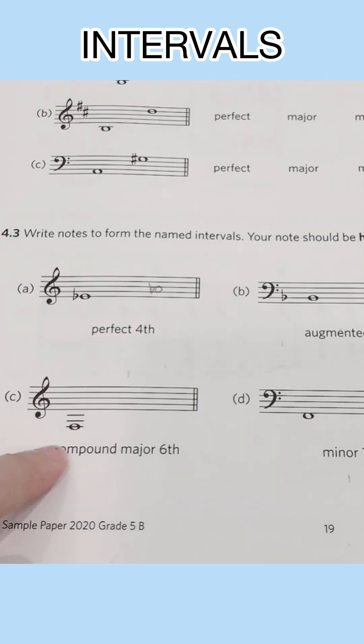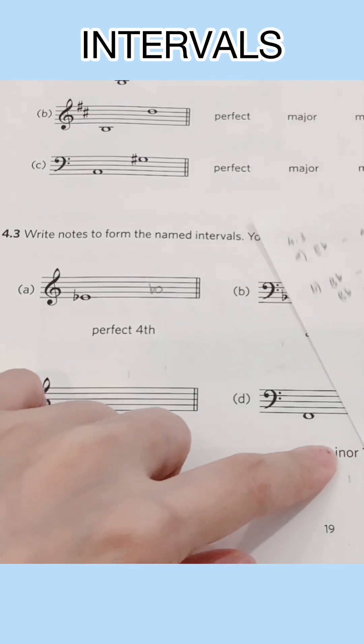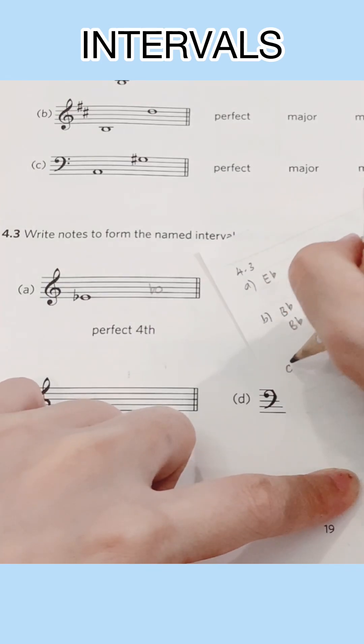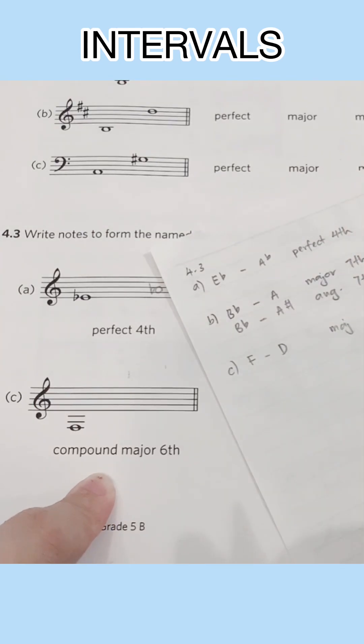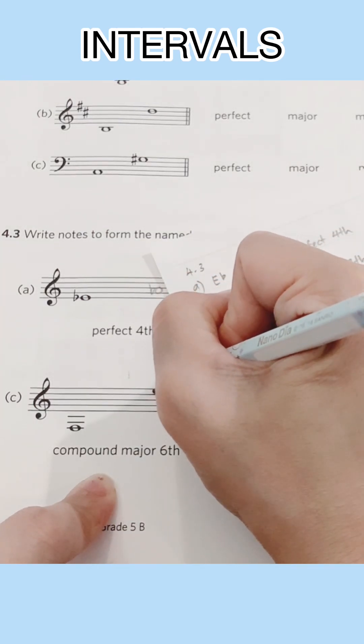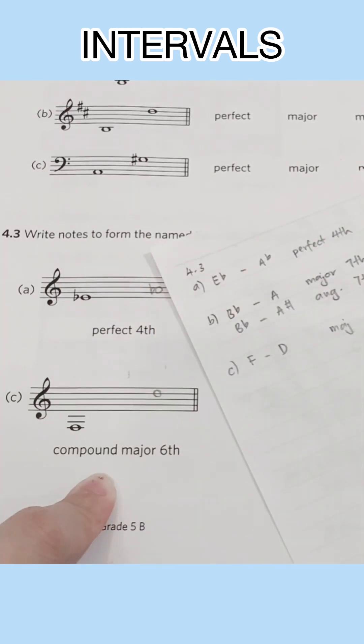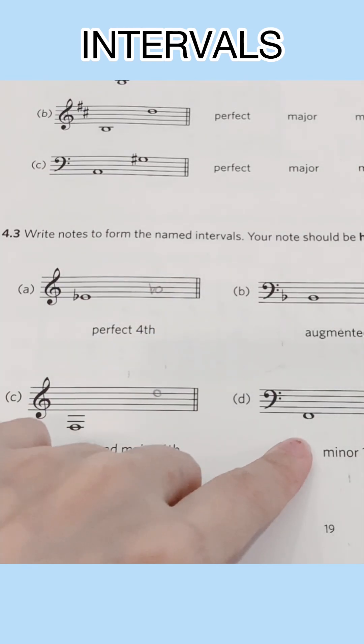Now we have a compound major sixth from F. If we count the letter names F, G, A, B flat, C, D. So a major sixth would be D. And remember, it's a compound interval. So write the higher octave of your D.